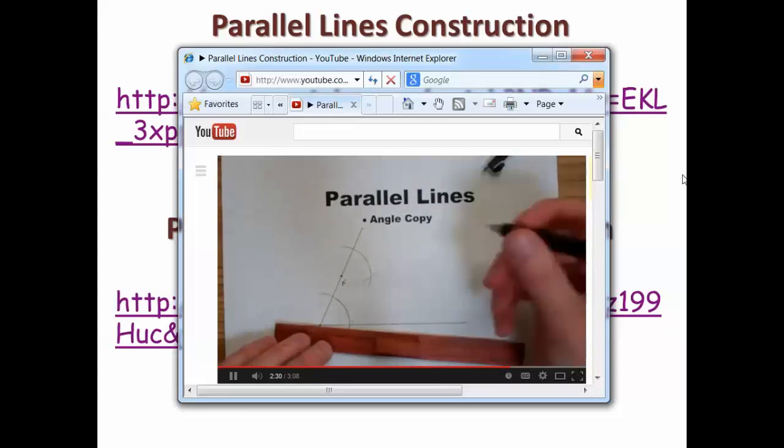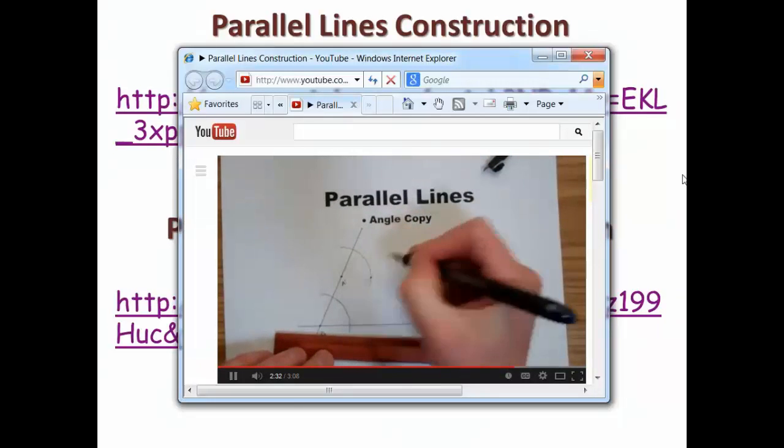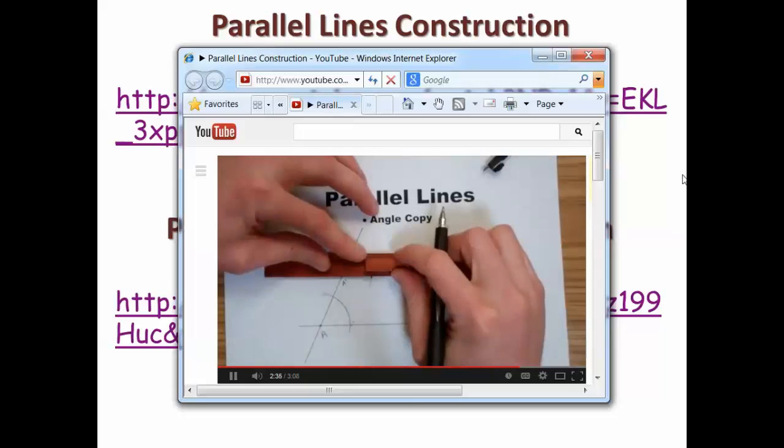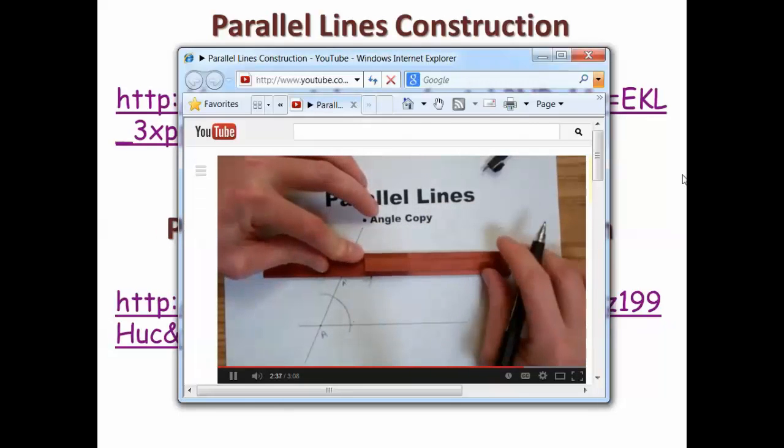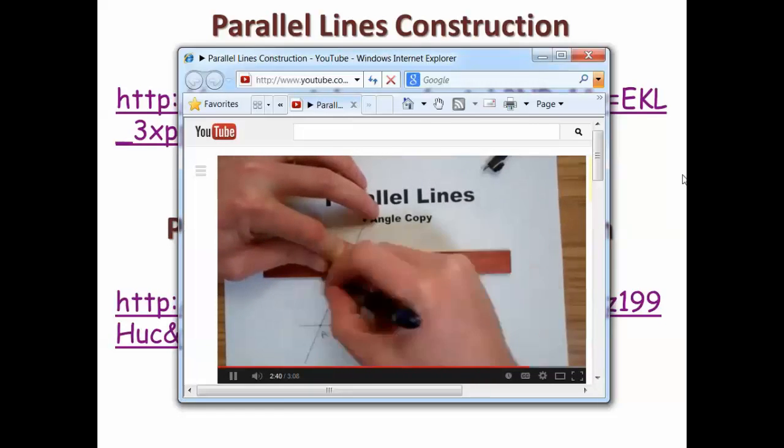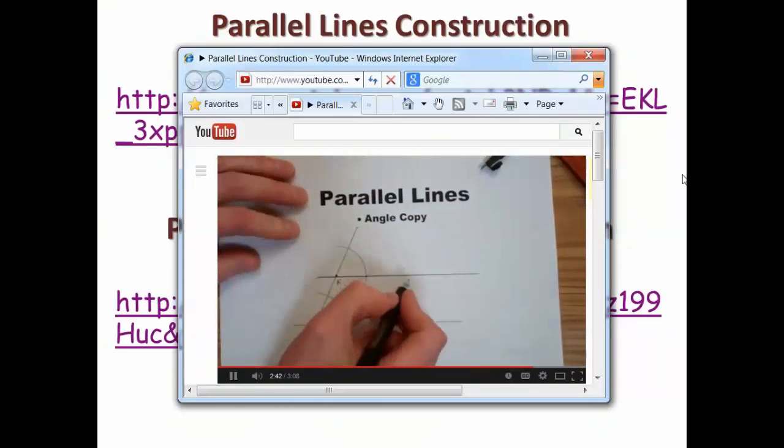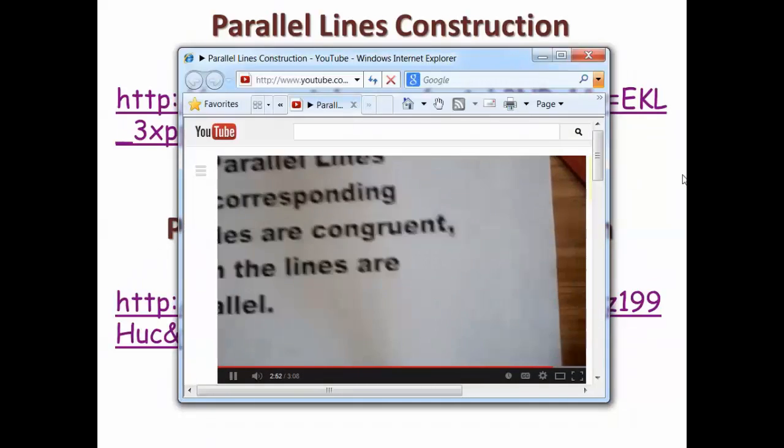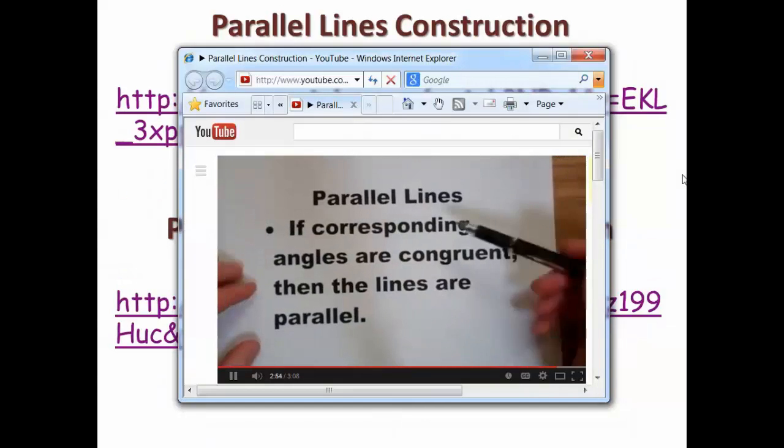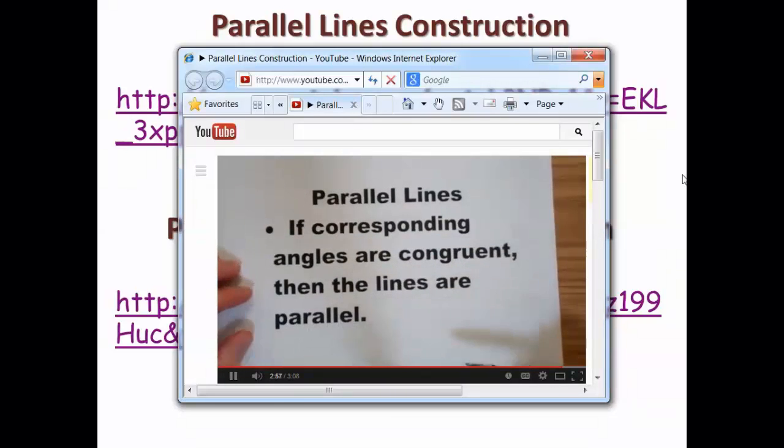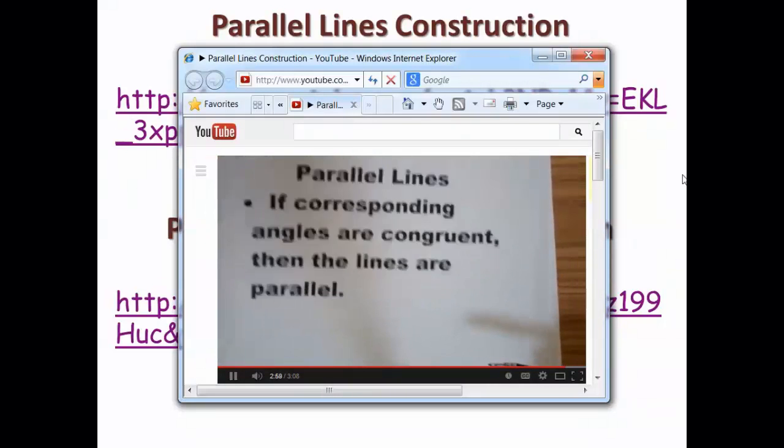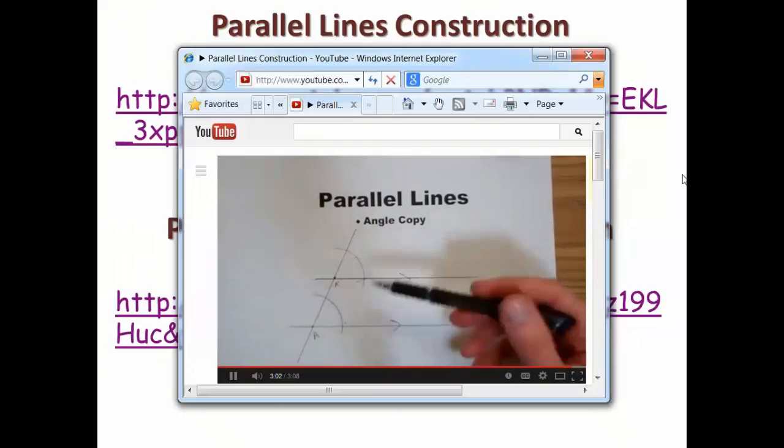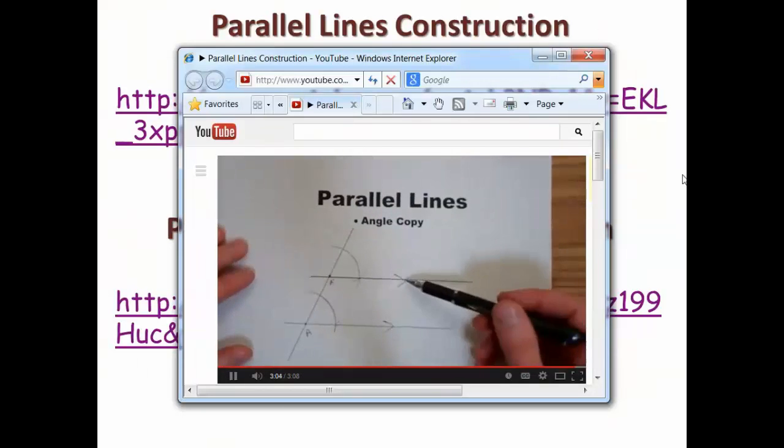Now I have two points, A prime and this new point. After I connect them, I have two parallel lines. This construction used the angle copy construction and the conjecture that states that if corresponding angles are congruent then the lines are parallel. These are corresponding angles and they're congruent, therefore the lines are parallel.